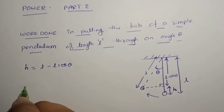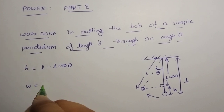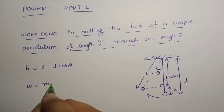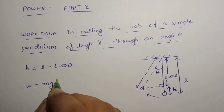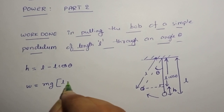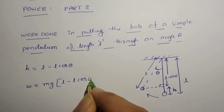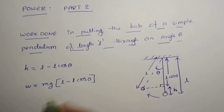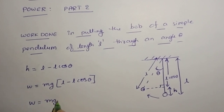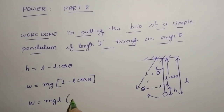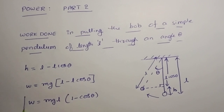So what is the work done? Work done is equal to change in potential energy, which is Mg into H, that is Mg into (L minus L cos theta). Taking L common, work done equals MgL into (1 minus cos theta).